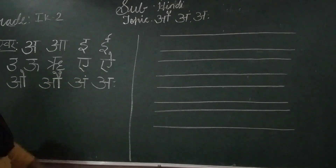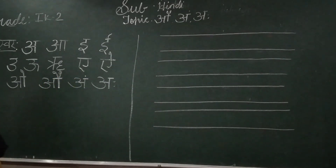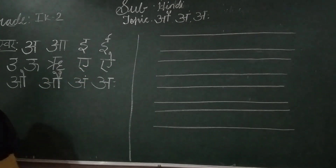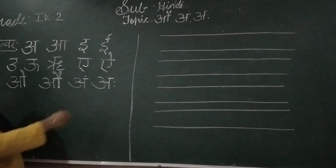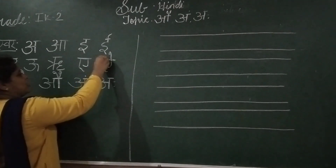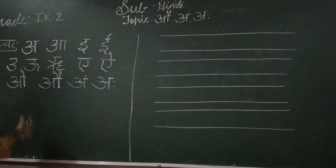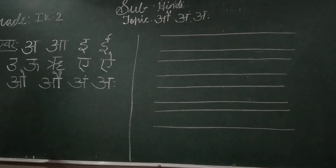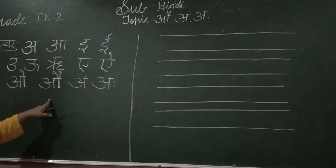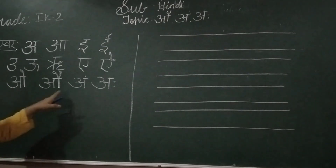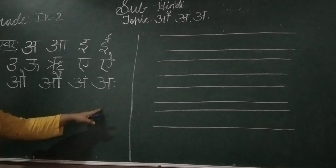E says ekhtara — sitar. A says anna — anna ka watla means spectacles. O says oon — lips. Au, Um, Aha.